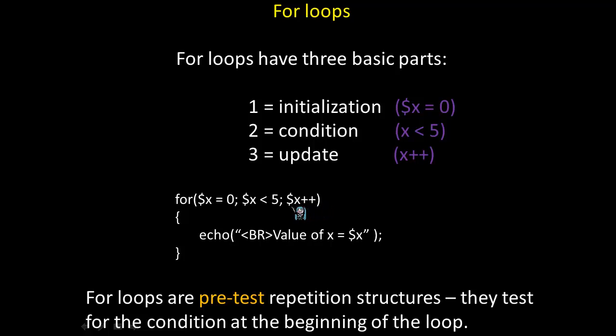What will happen is the echo statement will simply be called five times. Once x is five, it will no longer be less than five, and the for loop will stop executing. It will display an HTML line break and display the value of x, counting up as zero, one, two, three, four. Notice that since we're starting at zero as the initial value, we will only go up until four, because once x becomes five it is no longer less than five but equal to five, and we will fall out of the loop. This illustrates a common mistake known as the fence post error, where as humans we tend to think of always starting at one, but a lot of times in programming we start at zero.